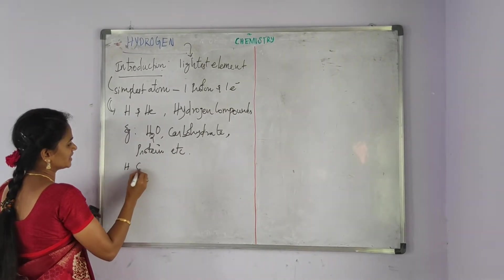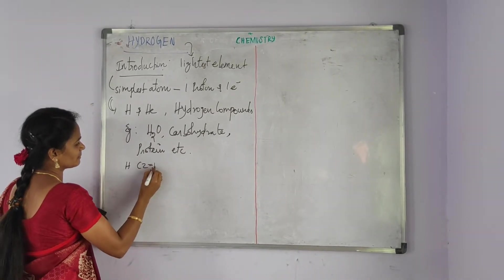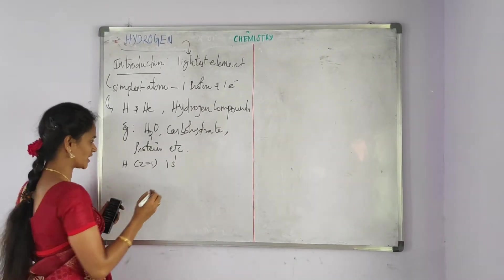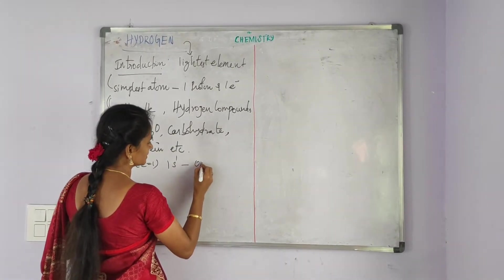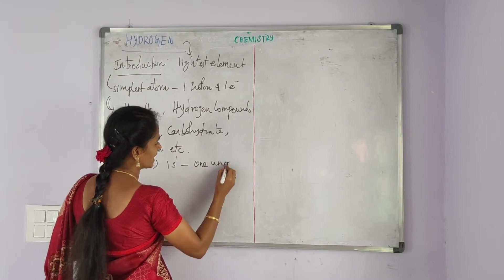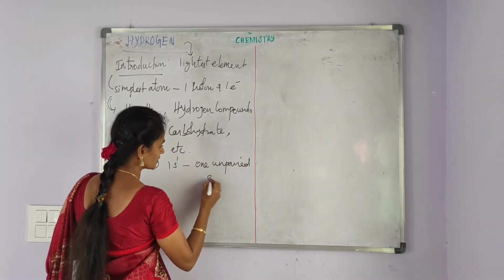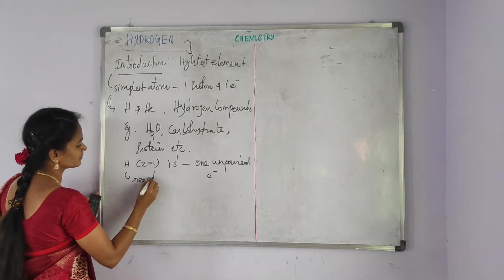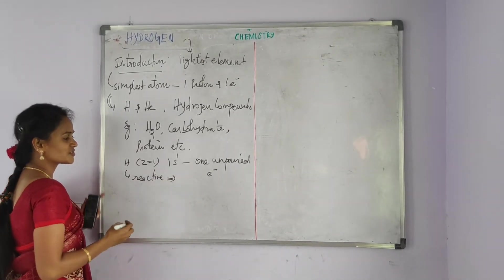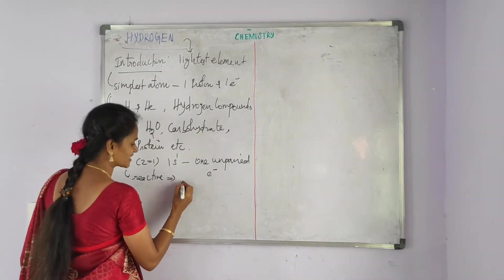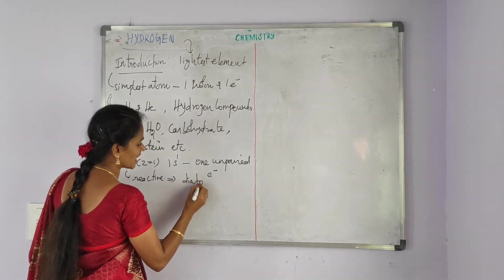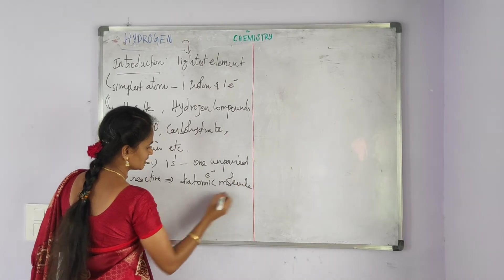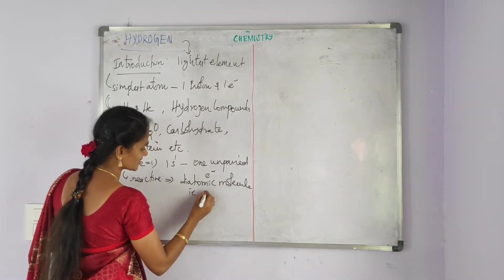Hydrogen's atomic number is 1. Its electronic configuration is 1s¹. The hydrogen atom contains one unpaired electron, so it is reactive. Therefore, hydrogen is present in the form of a diatomic molecule, that is H2.